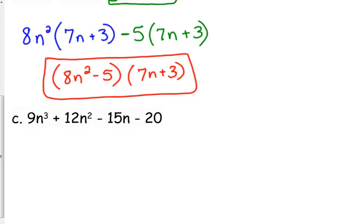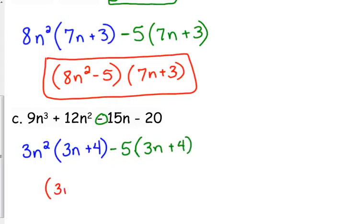9n cubed plus 12n squared minus 15n minus 20. For the first pair, 9 and 12, their GCF is 3n squared. We're left with 3n plus 4. We've got another negative. We need to take out a negative 5. We're left with 3n plus 4. Our final answer is 3n squared minus 5 times 3n plus 4.